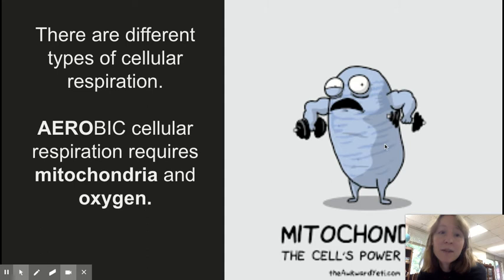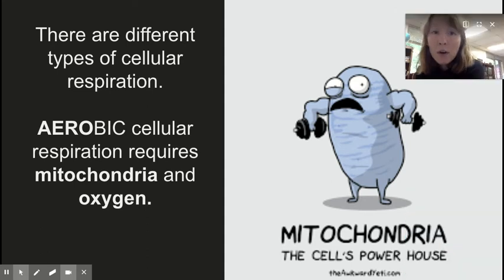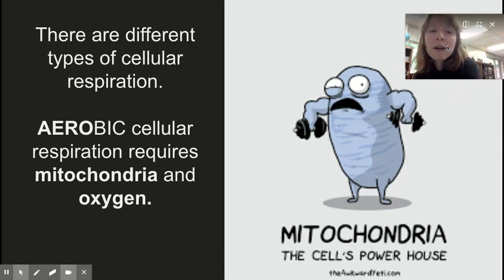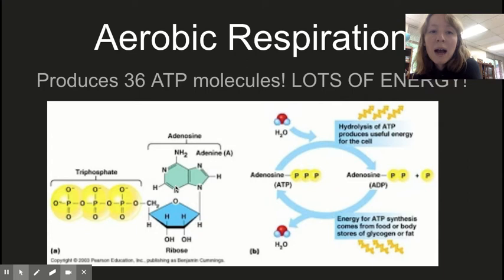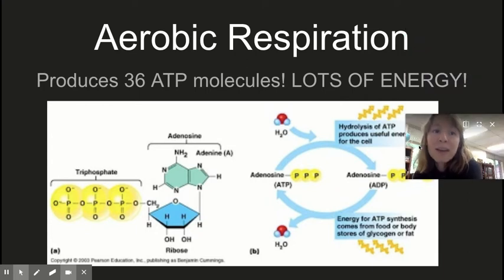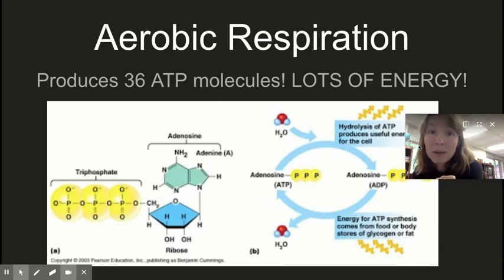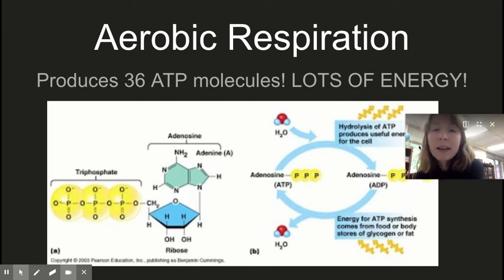We have different types of respiration. Aerobic cellular respiration is the type we talked about yesterday — it requires oxygen. 'Aero' means oxygen, and it also requires mitochondria, the powerhouse organelles of the cell where this reaction occurs. Aerobic respiration produces a lot of ATP per glucose: for every one glucose molecule, aerobic respiration produces 36 ATP molecules. That is a lot of energy, hence why the mitochondria are considered so powerful.